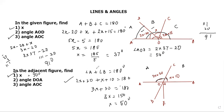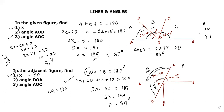Next it asks for angle DOA. DOC is a straight line so the total angle is 180 degrees. Angle a is 2x + 20; substituting x = 50 gives 2 × 50 + 20 = 120 degrees. Therefore angle DOA = 180 − 120 = 60 degrees.